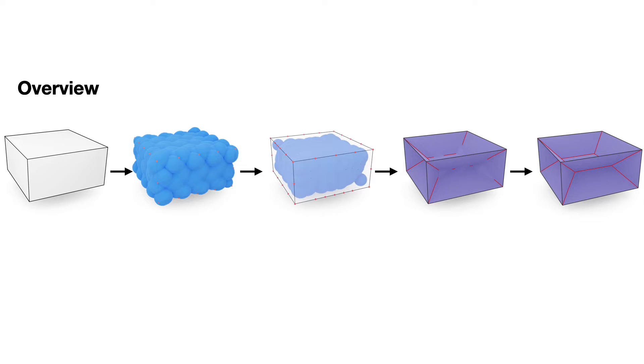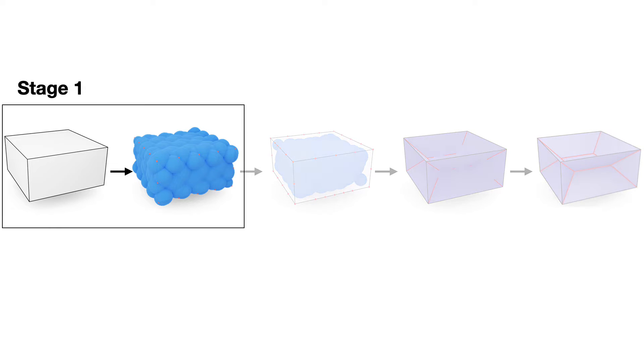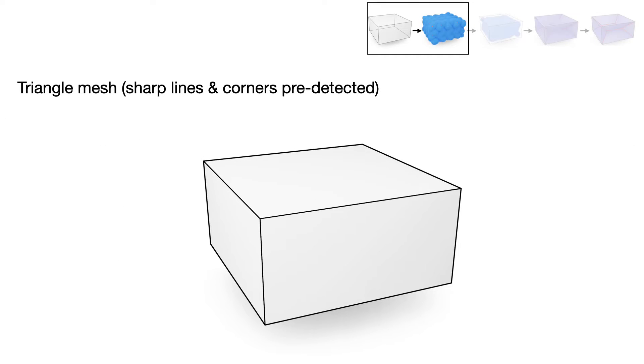Our pipeline consists of four major stages. Given a closed manifold mesh with sharp features pre-detected, the first stage is to initialize the medial spheres.